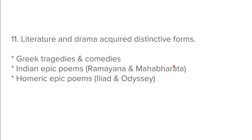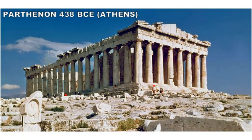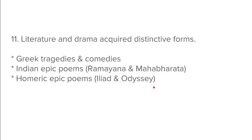We also see the development of literature and drama during this time. The Greeks have tragedies, which are all sad, and comedies, which are positive. We also have Indian epics from Hinduism. Other epics include those of Homer — the Iliad and the Odyssey — famous poems about heroes, warriors, and the gods.